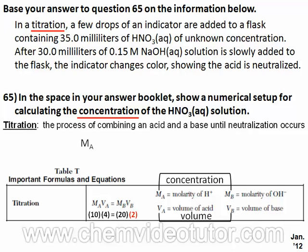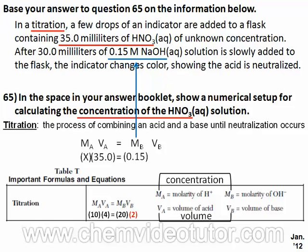When we use the formula in this question, MA is what we are solving for so we'll make that the X. The 35 milliliters of HNO3 represents the volume of the acid. The 0.15M of NaOH represents the molarity of the base, and the 30 milliliters of NaOH represents the volume of the base.